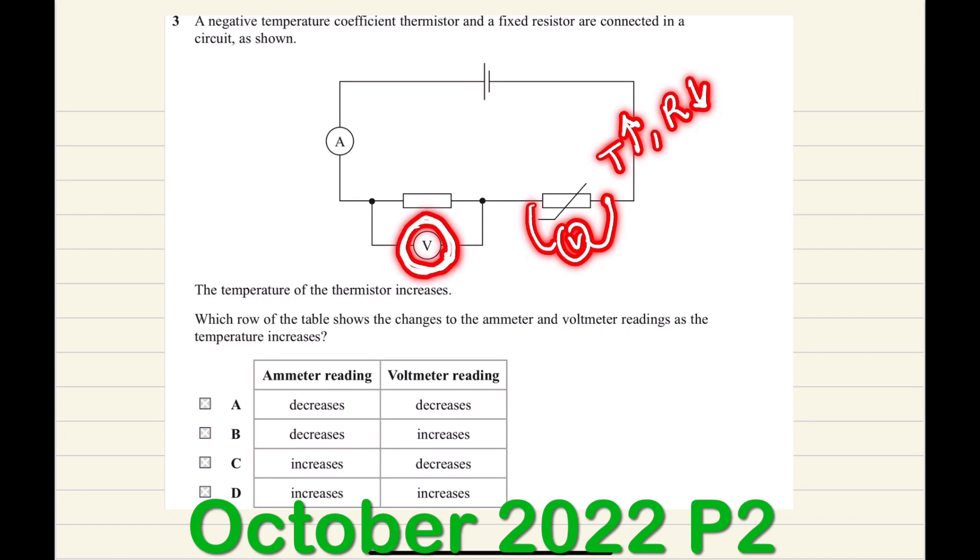The voltage across the fixed resistor increases. The correct answer for question three is that the ammeter reading increases and the voltmeter reading increases as well, so the answer is D.